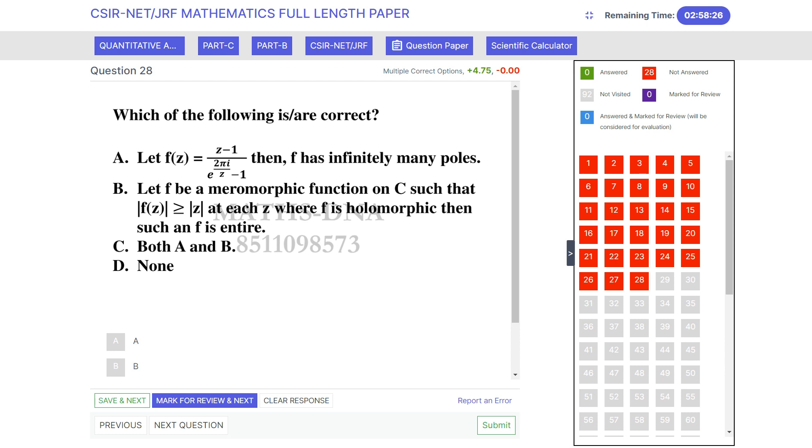Moving on to the question: which of the following is or are correct? Option A: Let f equals z minus 1 upon e raised to 2πi by z minus 1, then f has infinitely many poles. Option B: Let f be a meromorphic function on C such that mod of f(z) is greater than or equal to mod z at each z where f is holomorphic, then such an f is an entire function. Option C: both A and B are correct. And option D: none of them.